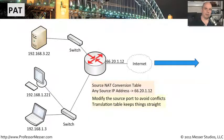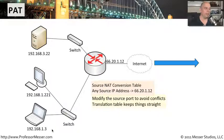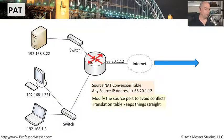Let's look at both of these scenarios. A port address translation, or PAT, is one where we have all of these workstations on the inside — here's 192.168.3.22, 192.168.1.221, and 192.168.1.3. These are all private networks behind our internet router, and nobody here has a public IP address. These IP addresses are non-routable on the internet. So what we've configured is a NAT inside our internet router that says if anybody is communicating from any source IP address, change their source IP address to 66.20.1.12.